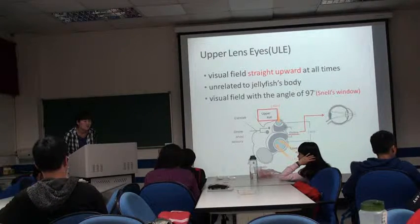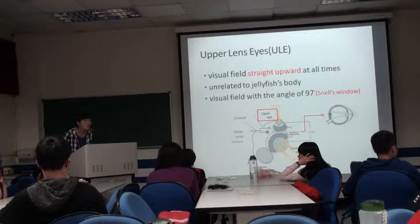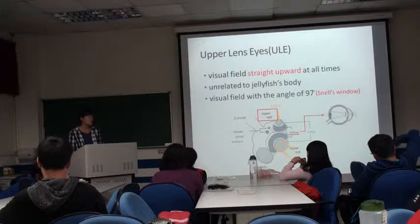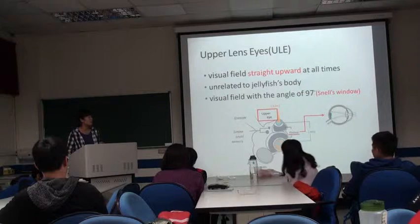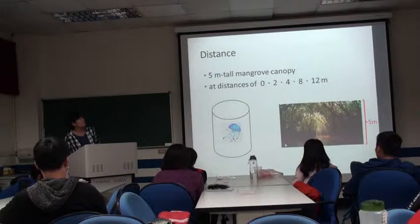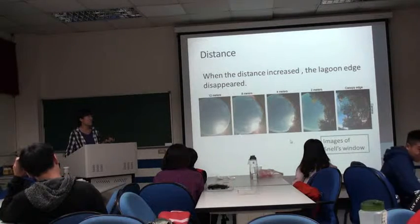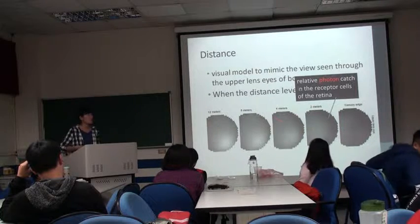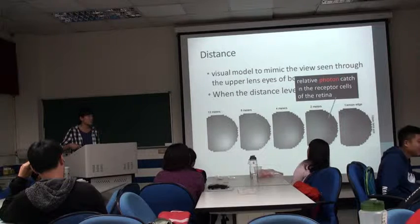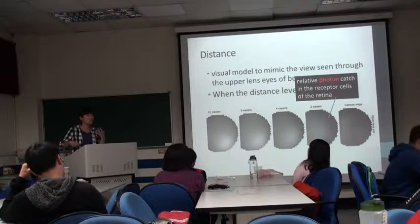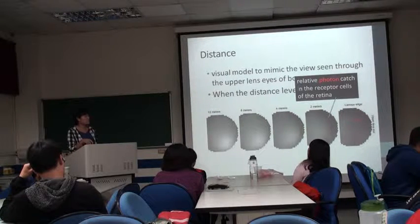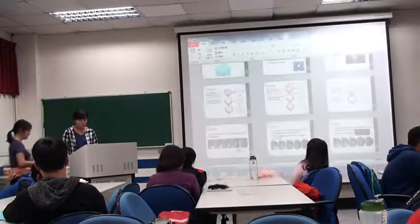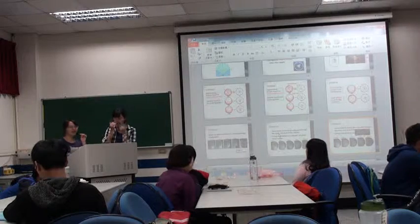Someone applying a computer model to the size of the jellyfish found that they can distinguish color. Maybe the question is whether Box Jellyfish can detect color. I think they cannot, because based on the photon catch data through the upper lens eyes, we guess they cannot distinguish colors — they are just detecting the canopy's presence by catching more photons.